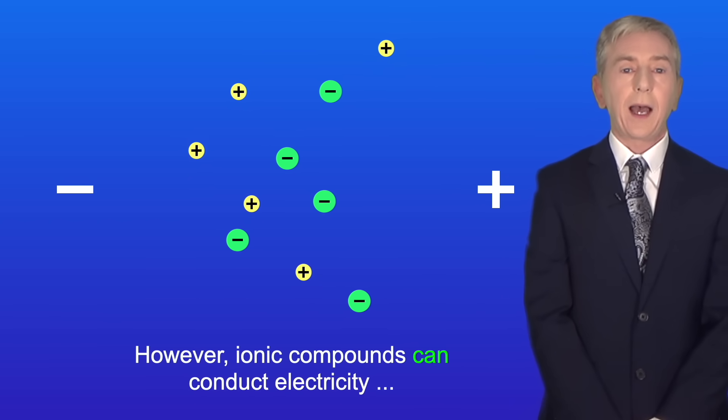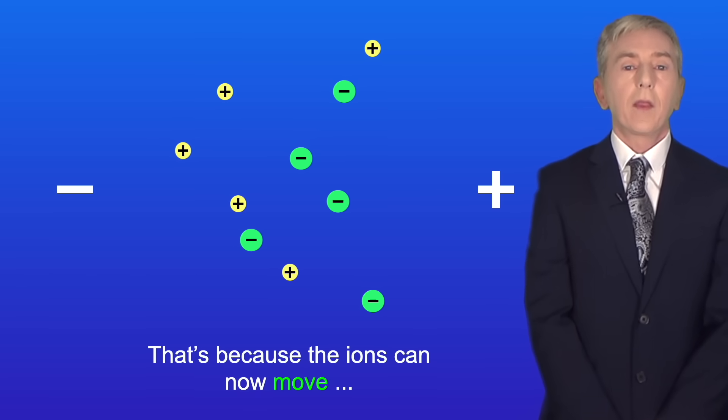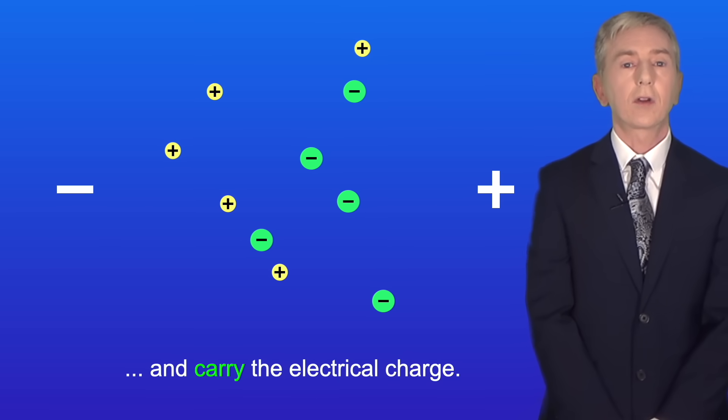However, ionic compounds can conduct electricity when they're melted or dissolved in water. That's because the ions can now move and carry the electrical charge.